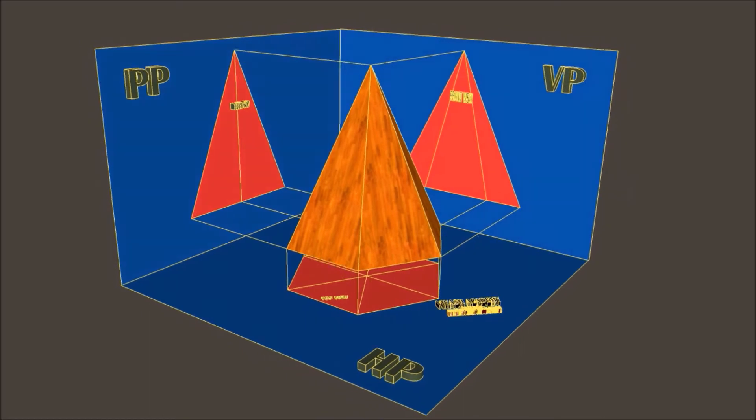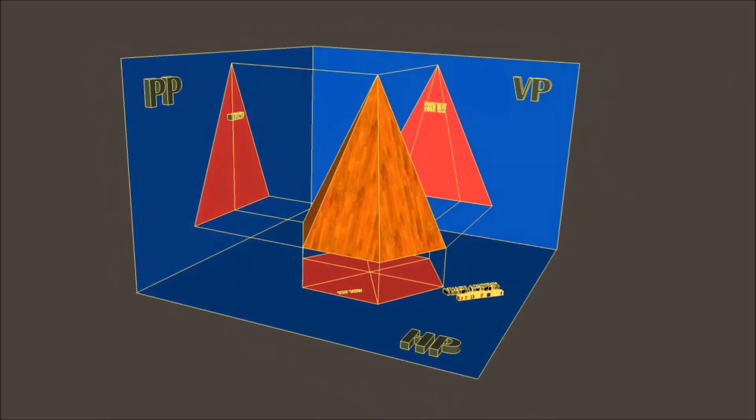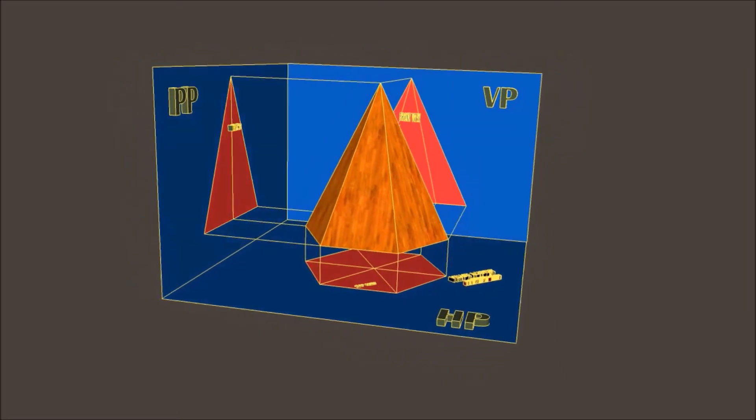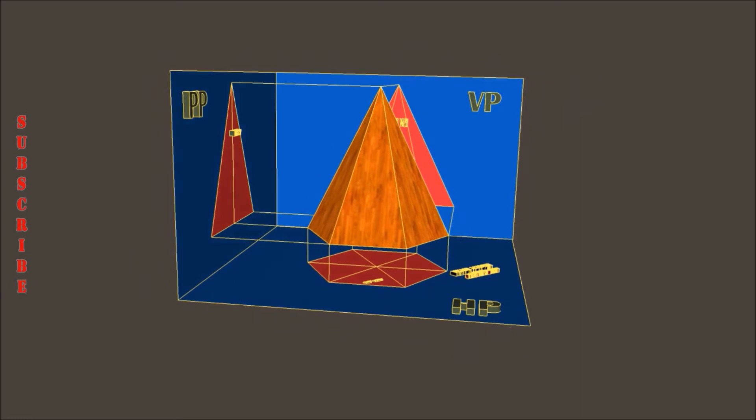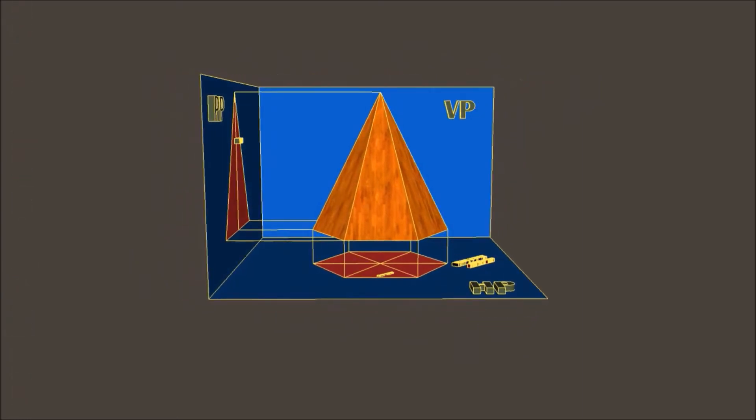When we observe this hexagonal pyramid from this side, we are able to see a triangle. Along with the triangle we are able to see two more faces. These two lines represent the faces which are visible from the front of this object.